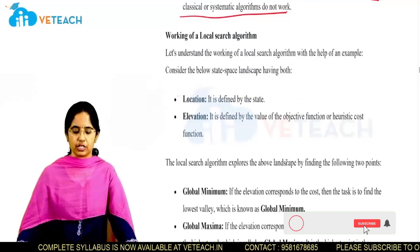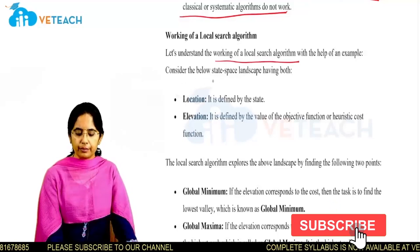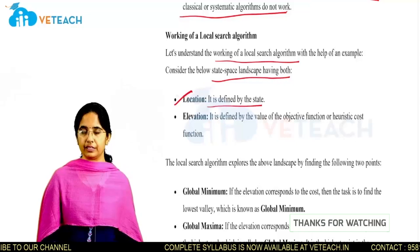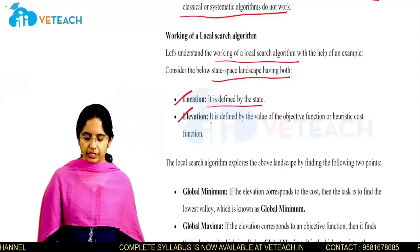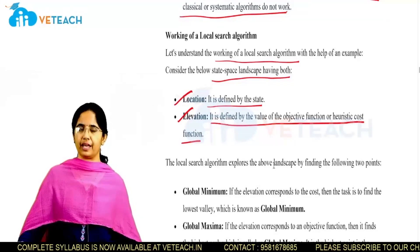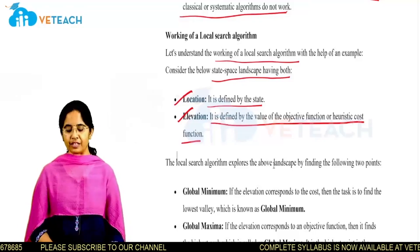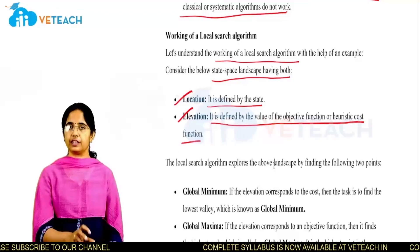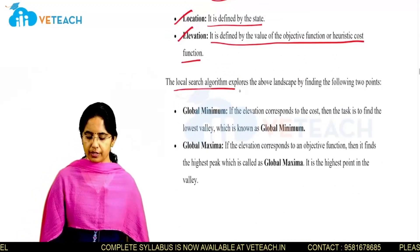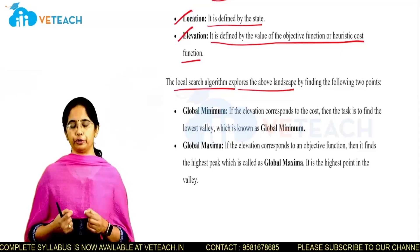Now let's see how the local search algorithm works, using an example. Consider a state space landscape having both location and elevation. Location refers to the state we consider for a given problem. Elevation is defined by the value of the objective function or heuristic cost function. Every computational model in AI has some objective function, which is also considered in local search and optimization problems. These algorithms explore the landscape — the state space — to perform the search process.